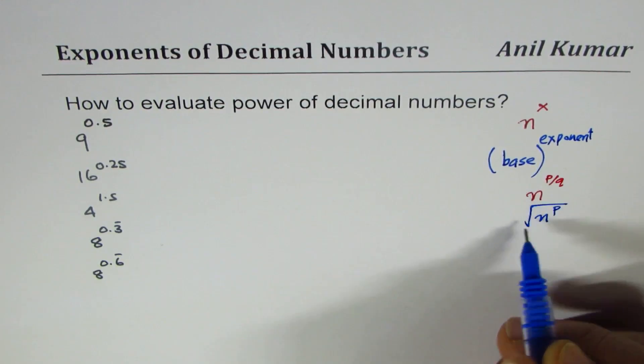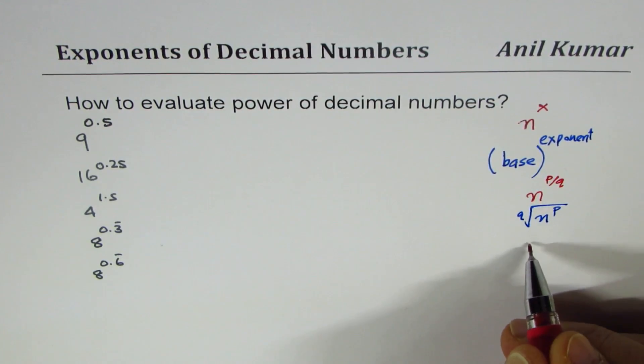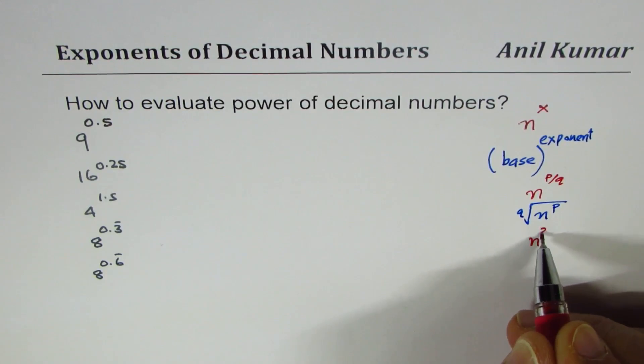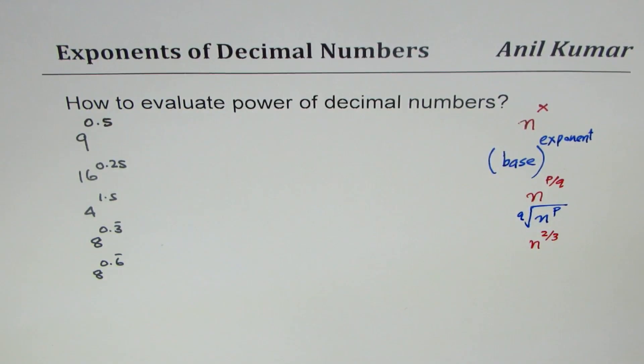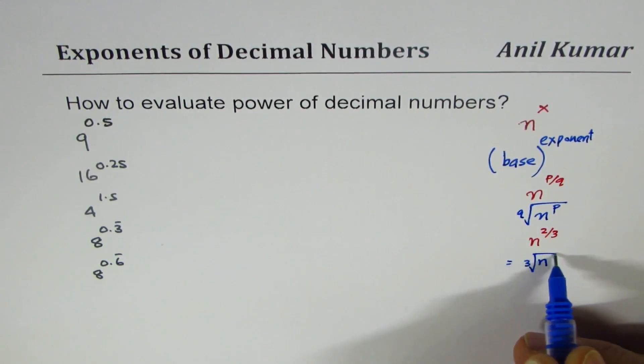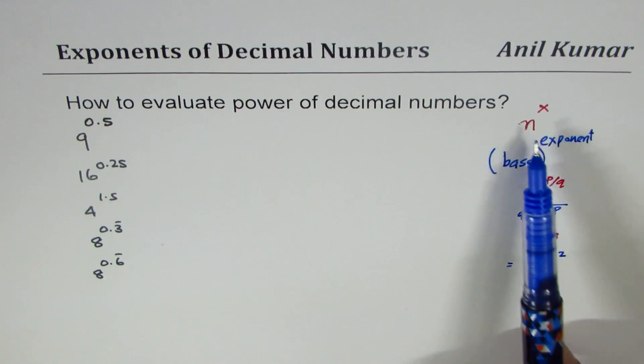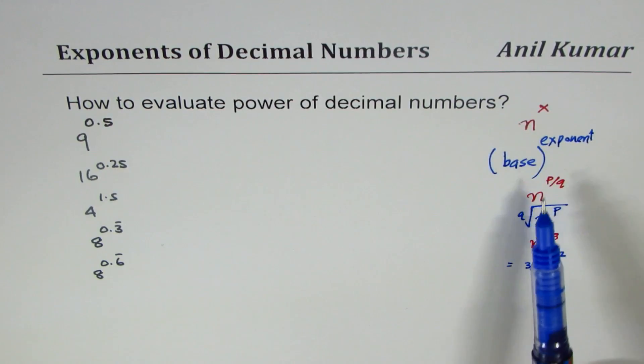You are very familiar with n to the power of p over q, which really means n to the power of p and the root is q. For example, if I have n to the power of 2 over 3, then that really means it is equal to cube root of n and square of n. That is to give you some background so that you understand what these exponents look like or how should they be treated when we write them as fractions.